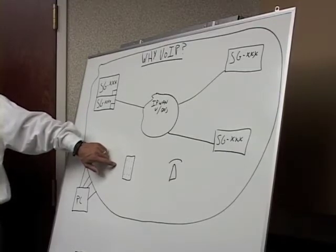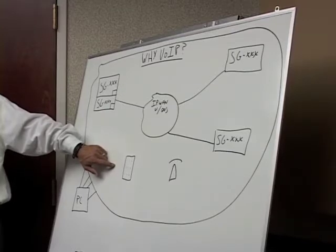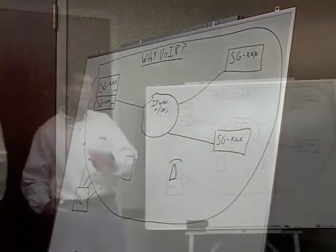Star, star, an extension number and pound conferences a call. Star, star, an extension number, pound, pound actually transfers a call. So I actually have call control from a mobile phone.